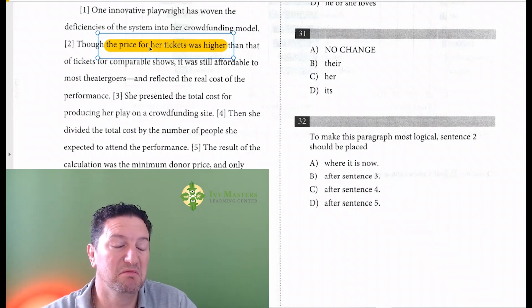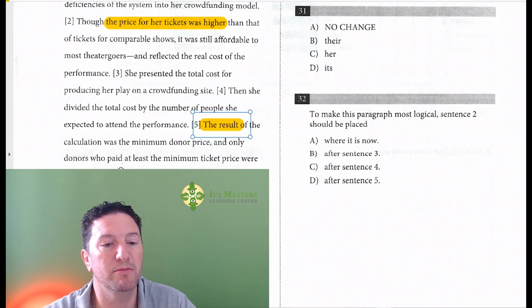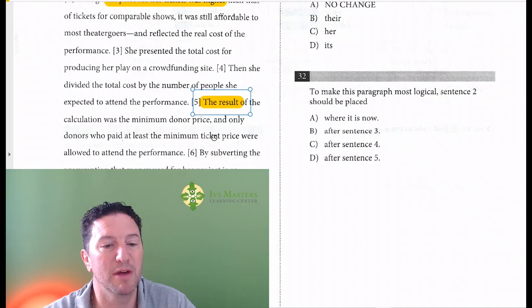Maybe this goes after that, but let's read sentence 5. The result of the calculation was a minimum donor price and only donors who paid at least the minimum ticket price were allowed to attend the performance.